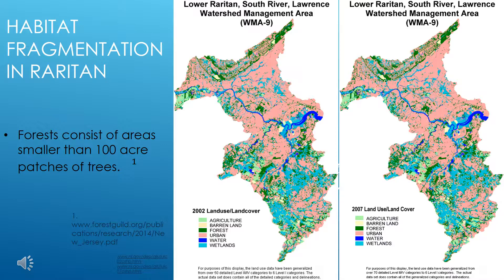Within the Raritan watershed, there has been a decrease in the amount of forest cover, and the majority of the current forest land exists in small patches, most of which are smaller than 100 acres. This may seem detrimental to deer population growth. However, deer prefer this type of environment — they are browsers and like to forage at the edge of forests. So while the amount of forest has decreased, the amount of forest edge habitat has increased.